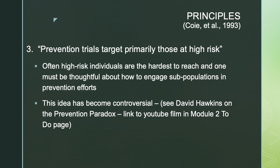Another principle is that prevention trials should target primarily those at high risk. This idea has become controversial — in module 2, you'll have an opportunity to watch David Hawkins on what he calls the prevention paradox. This principle, as first meant in the early 90s, suggests that often it's the highest risk individuals who are the hardest to reach with a prevention program, and you have to be really thoughtful about how you're going to engage that high-risk population. Dr. Hawkins later brings up the idea that it's also important to reach the general public — that high-risk individuals are important, but so is the general population.